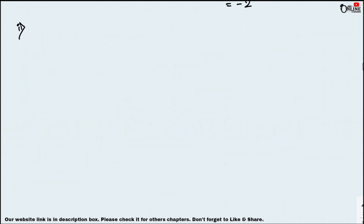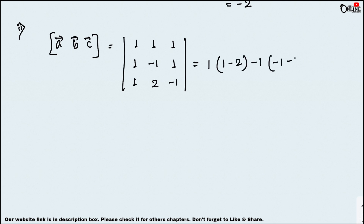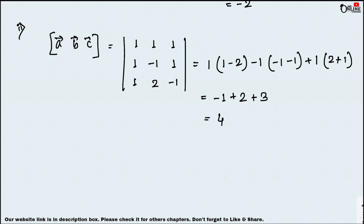Part two: write coefficient rows 1, 1, 1; then 1, −1, 1; then 1, 2, −1. Expanding: 1×(1−2) − 1×(−1−1) + 1×(2+1) = −1 + 2 + 3 = 4. So the volume equals 4 units.